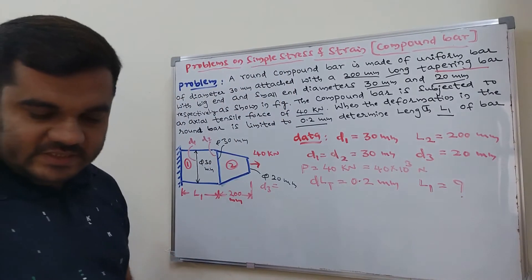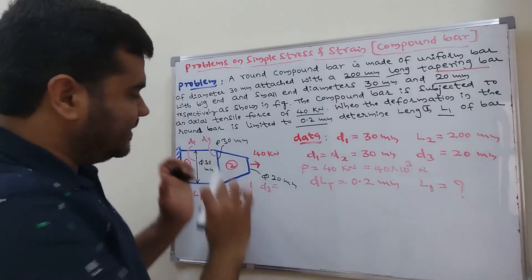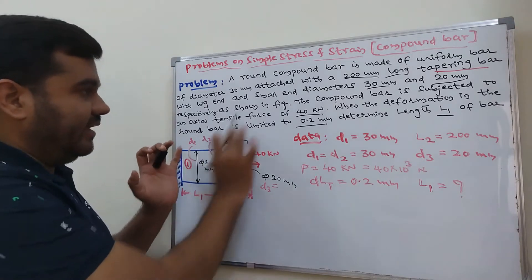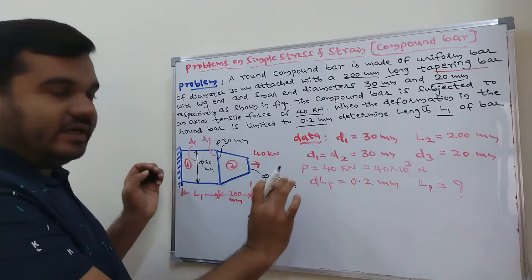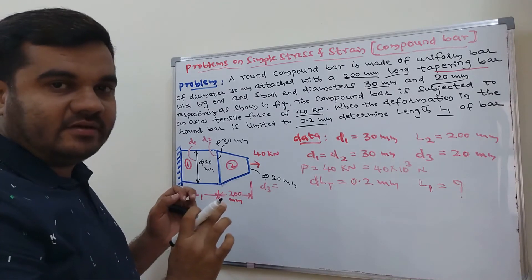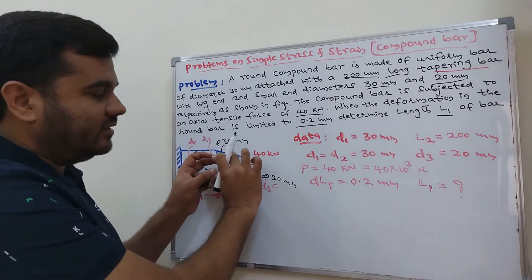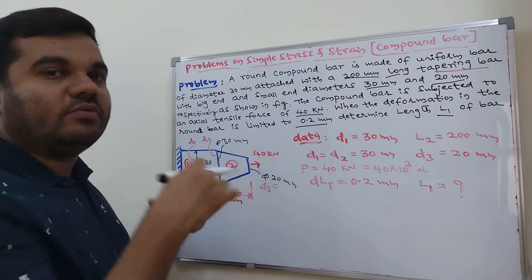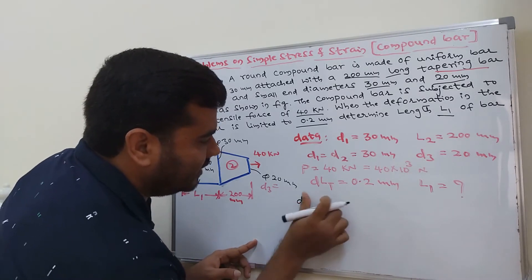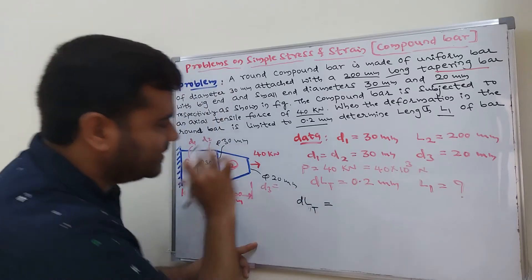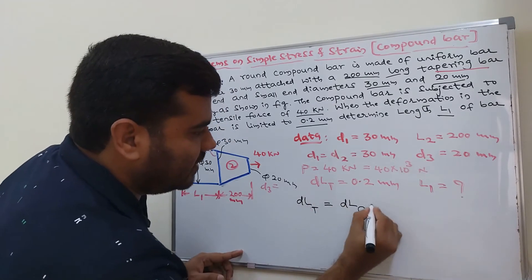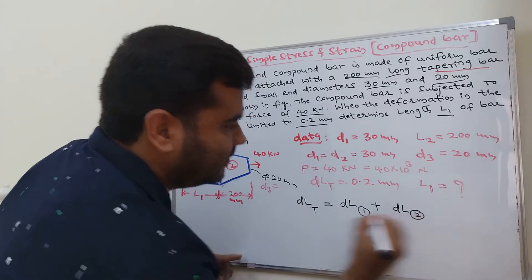To solve this, we know that the total deformation of the compound bar equals the deformation of the first bar plus the deformation of the second bar. So total deformation = δ₁ + δ₂, which gives us: 0.2 = deformation of first bar + deformation of second bar.